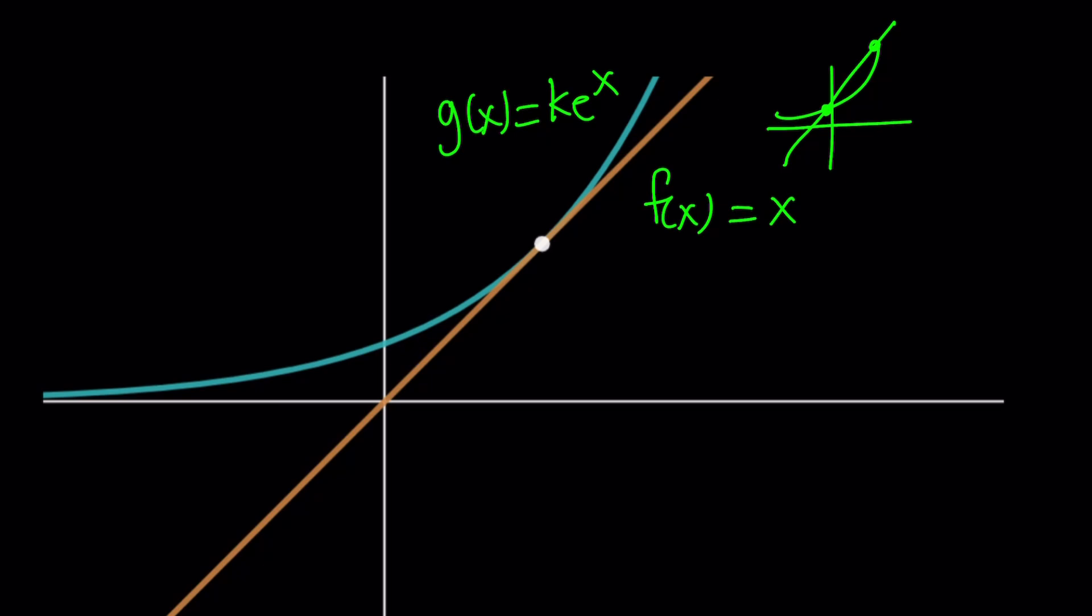Let's call the abscissa—I mean the x-coordinate, such a weird word—let's call the x-coordinate of the intersection point r for root, and then this is what needs to happen.